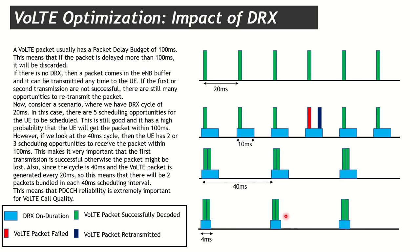The issue here is that if the PDCCH is not decoded successfully, the UE will not know that a packet was ever transmitted. The eNB needs to retransmit it, but because the UE is only awake for 4 milliseconds and a retransmission needs around 8 milliseconds, the eNB must move the retransmission to the next on-duration session. This packet was originally delayed by 20 milliseconds, and now due to the retransmission it is delayed by another 40 milliseconds — giving an overall delay of around 60 milliseconds.